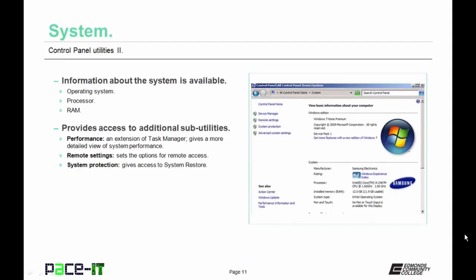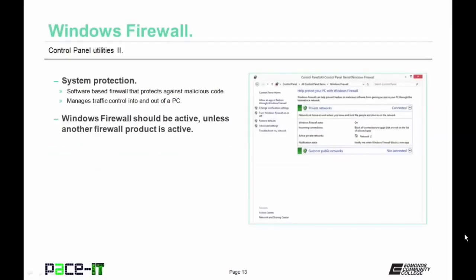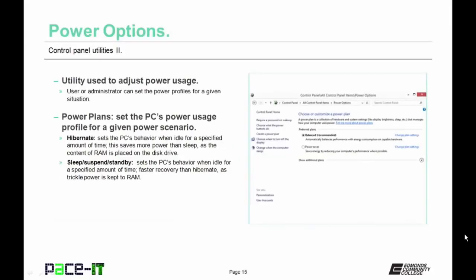The System utility provides information about the system like the OS, processor, and amount of RAM, and also gives access to additional applets. The Performance utility is an extension of Task Manager giving a more detailed view of system performance. Remote Settings is where you set options for remote access to the system. The System Protection utility allows for system restore. Windows Firewall is a software-based firewall protecting against malicious code that controls traffic into and out of a PC — it should be active unless another firewall product is present and active.